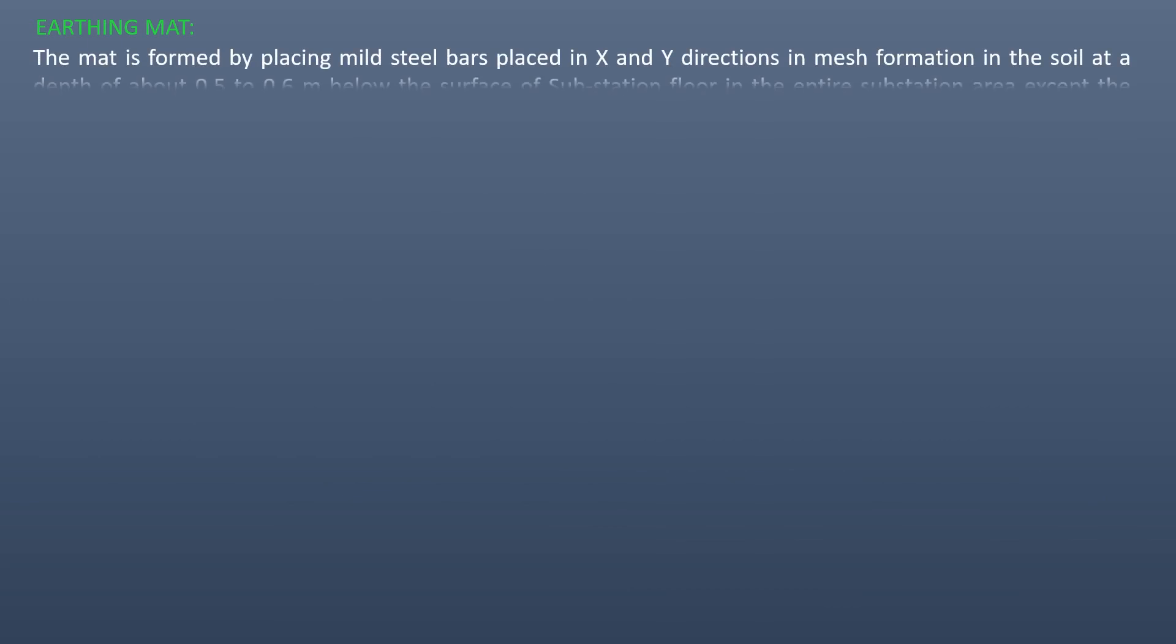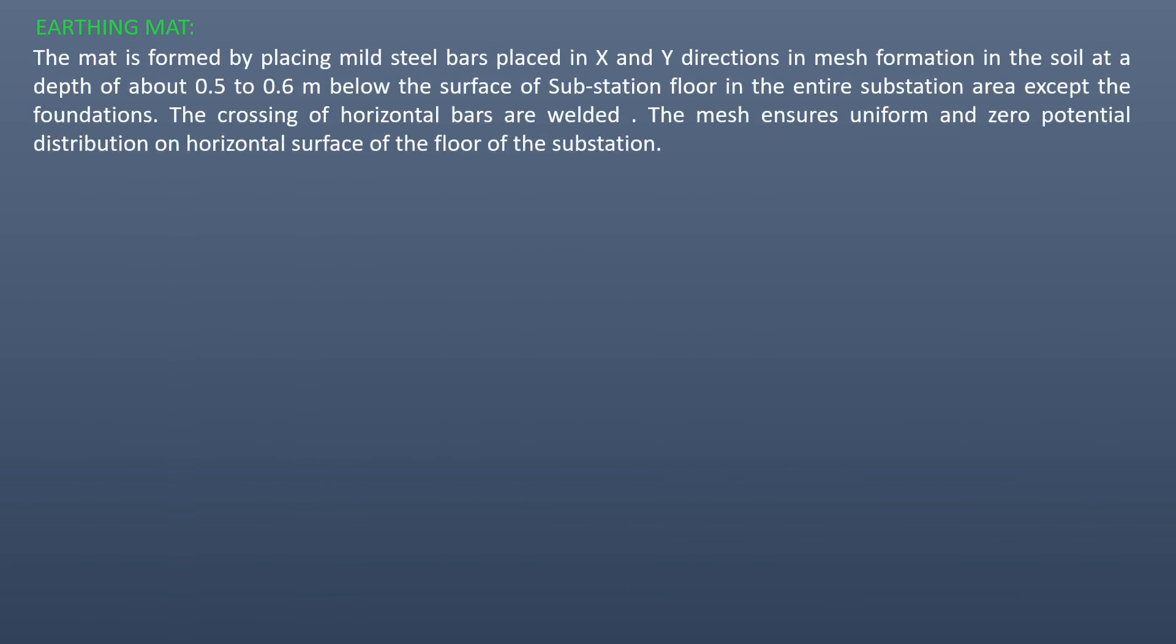The mat is formed by placing mild steel bars placed in X and Y directions in mesh formation in the soil at a depth of about 0.5 to 0.6 meter below the surface of the substation floor in the entire substation area except foundations. The crossing of horizontal bars are welded. The mesh ensures uniform and zero potential distribution on horizontal surface of the floor of the substation.